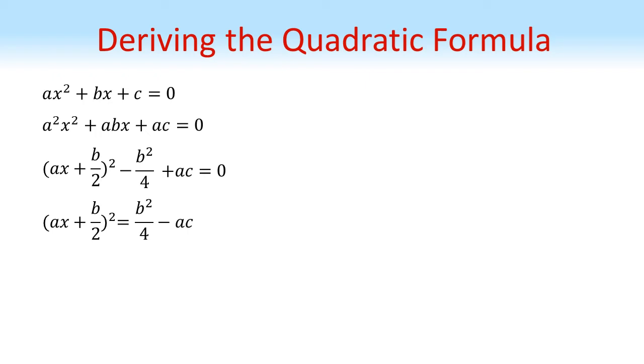We're going to move the b squared over four and the ac to the other side by adding and subtracting. If we multiply by four, this gets rid of the fraction on the right hand side.